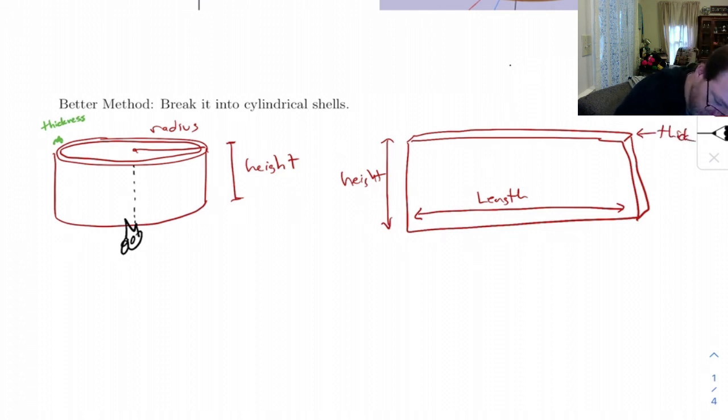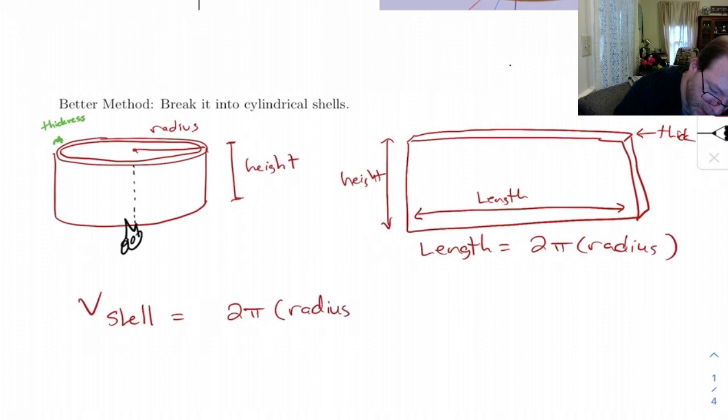And the length, the length of this is equal to the circumference of the shell. And the circumference is two pi times the radius. So the volume of a shell is two pi radius times height times thickness. And that's the thing that you want to memorize.